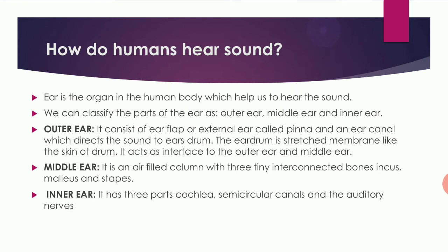How do humans hear sound? We hear sound through an organ called the ear, which helps us to hear. The ear is classified into three parts: outer ear, middle ear, and inner ear.